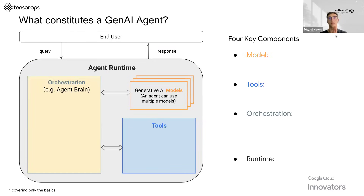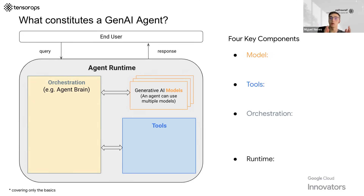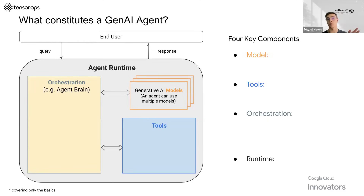Let's dive into the four key components of agents. There are tools, which I already mentioned. Then, of course, behind this there are models — generative AI models, LLMs. For a single agent, you can have more than one model, more than one LLM — your Geminis, your GPTs, etc. — because you may have one model doing the reasoning, another using a tool, and another answering back to the user. Different sized models with different expertise. You can really customize all of this.